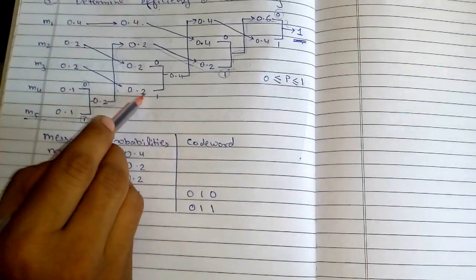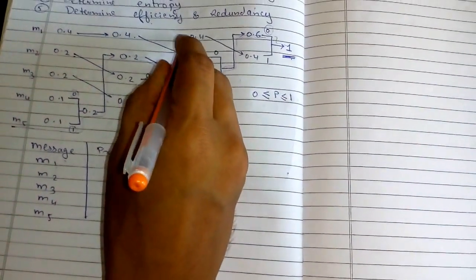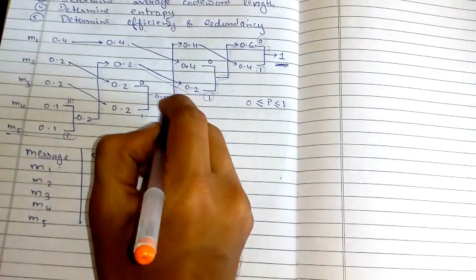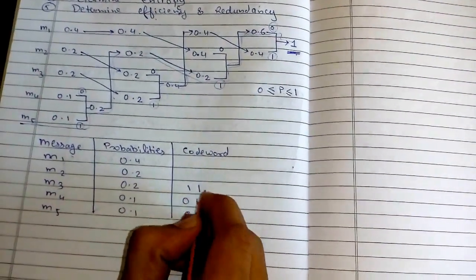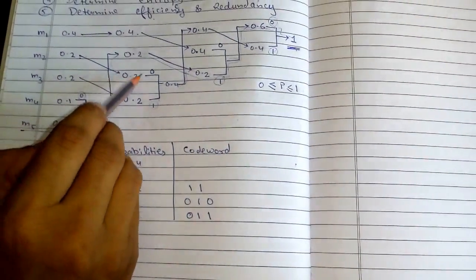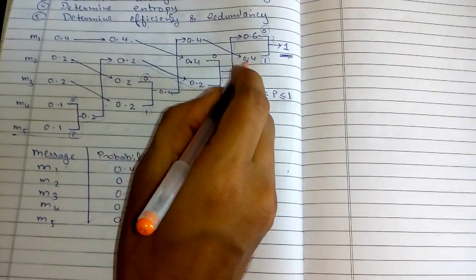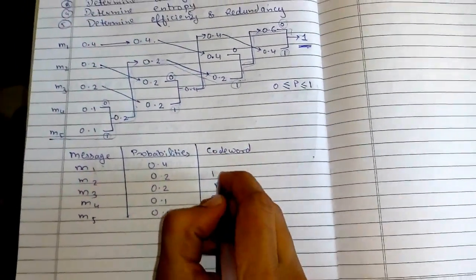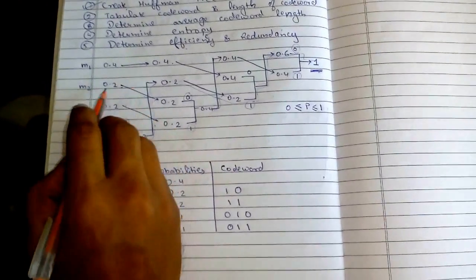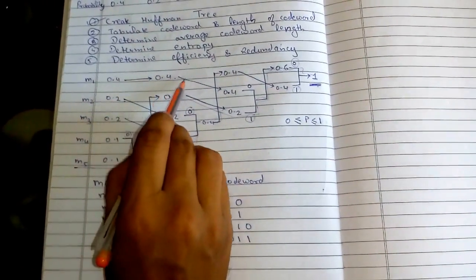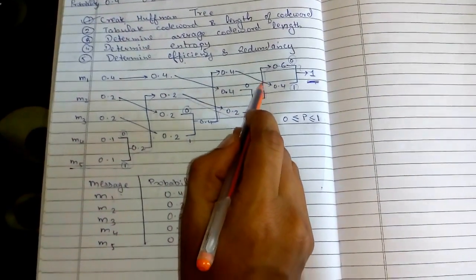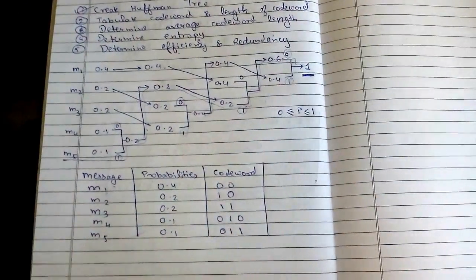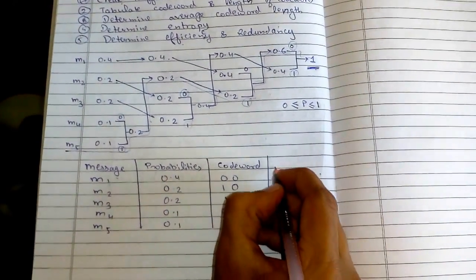For M3, it goes from here encountering 1, then goes up and again encounters 1, so the codeword is 1, 1. For M2, it goes from here encountering 0 then 1, so in reverse order it is 1, 0. For M1, it goes from here encountering 0 then again 0, so the codeword is 0, 0. We have completed the codeword table.